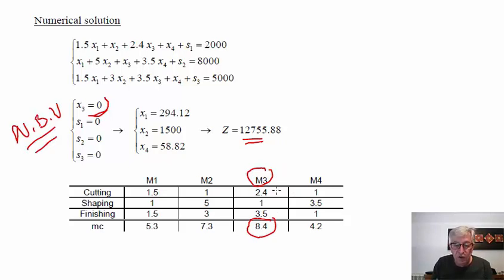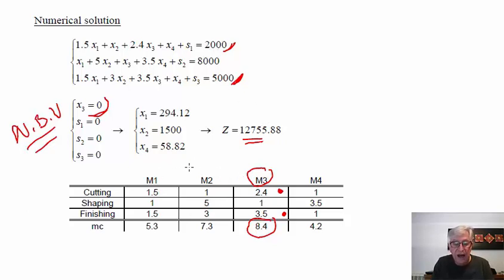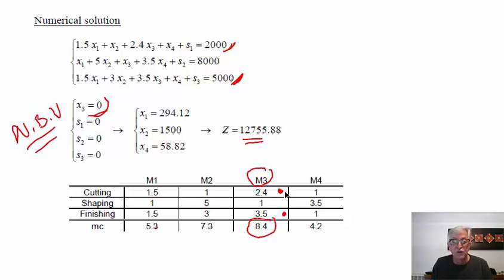Why is X3 not produced? Because it uses too much time of resources 1 and 3, which are the ones with less time available. The other products are able to compensate their lower unit contribution margin with higher volume. This is one of the reasons why this analysis is very important: the unit contribution margin is an important parameter, but resource consumption must also be taken into account.